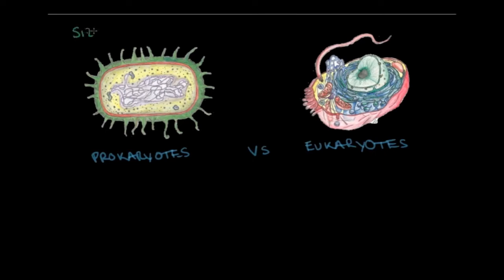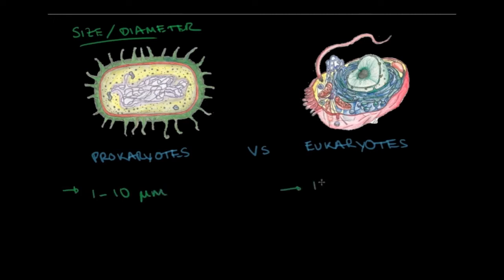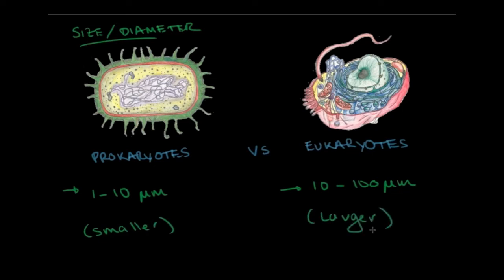Next, let's compare the sizes of these two types of cells in terms of diameter. In prokaryotes, we're looking at between 1 and 10 micrometers. In eukaryotes, these cells can range from 10 to 100 micrometers. So prokaryotes are definitely smaller and eukaryotes are larger cells.